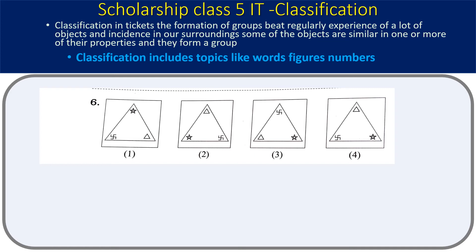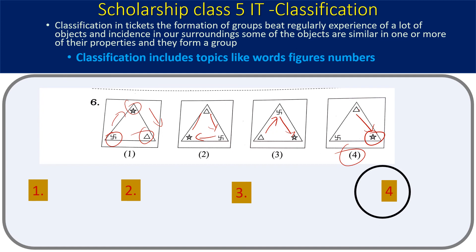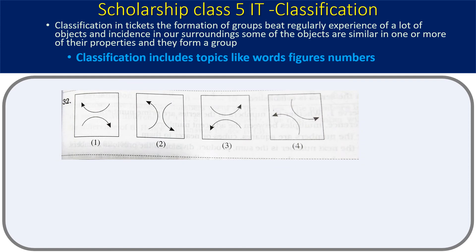Here comes another set of figures. We have a star, a triangle, and a swastik symbol. Thinking clockwise, after the triangle in the clockwise direction we have a star — but only in one particular case. So that case where the clockwise sequence is different will be the exception and the answer. This is a relatively easy question.